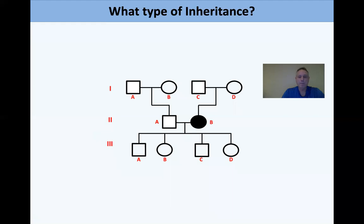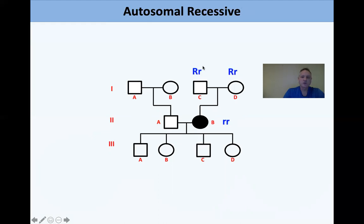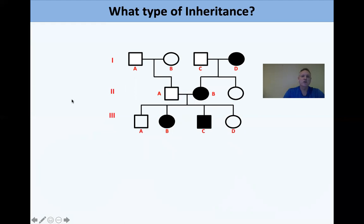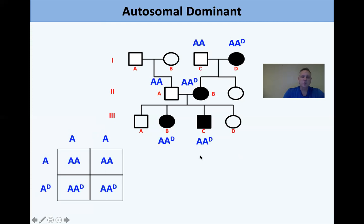Another pedigree example: two heterozygous carriers had an affected offspring — that's autosomal recessive, the easiest to identify. In another example, a mother in generation one is affected and one or two of her offspring are affected; in generation three, about half are affected. That's autosomal dominant — you can draw a Punnett square to confirm.